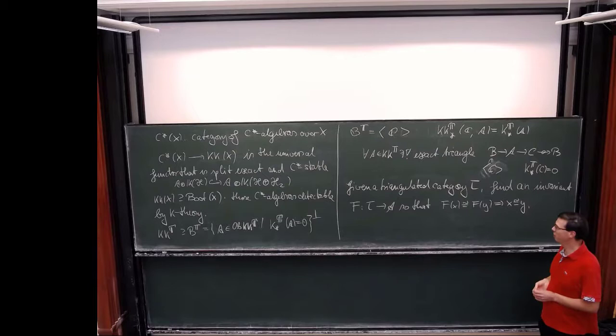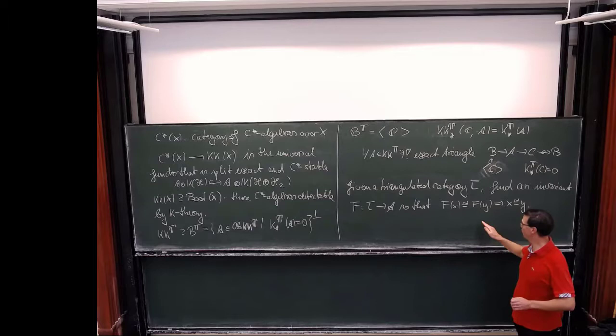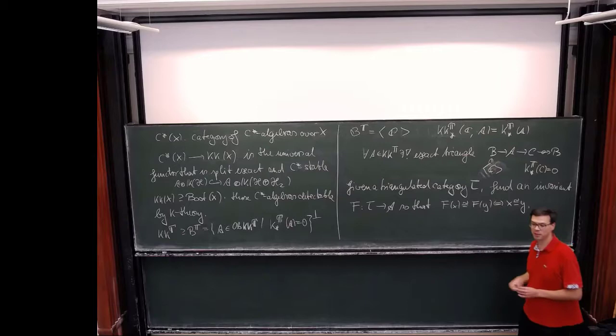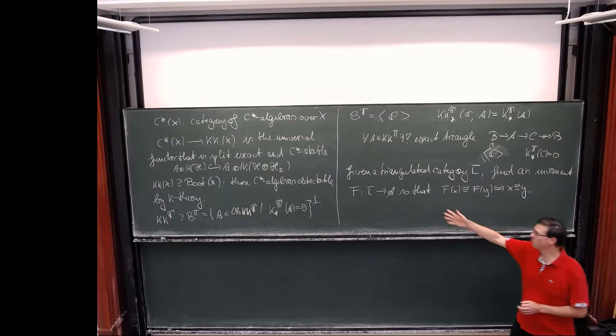The abstract problem, which topologists have frequently encountered: you have your favorite triangulated category — it could be the bootstrap class in KKX — and you want to find an invariant F, some functor to some other category, so that isomorphism of the invariant implies isomorphism. The converse is trivial anyway.